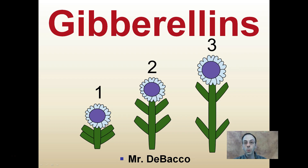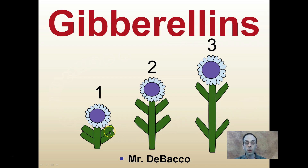Here we're going to look at the plant hormone gibberellin. If you look at the three plants pictured here in the image and look at what the difference is between them, it's the distance between the nodes — the internode length — and gibberellins do influence the internode length of plants.